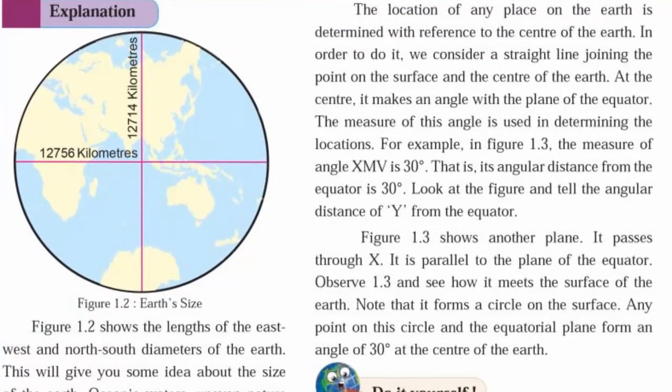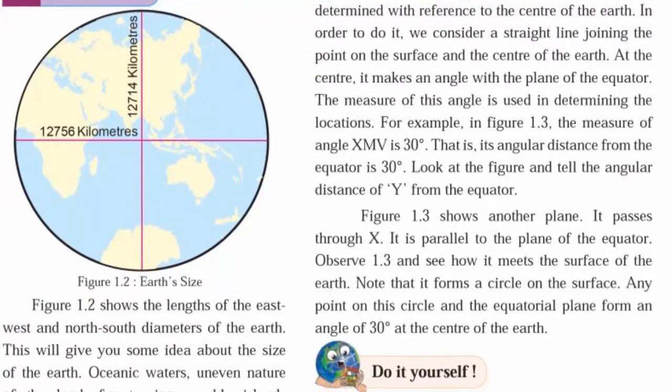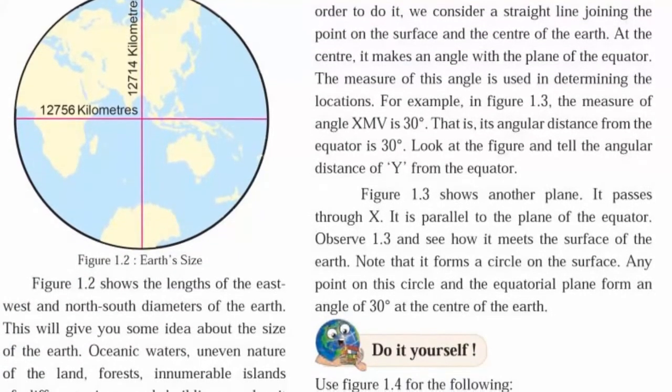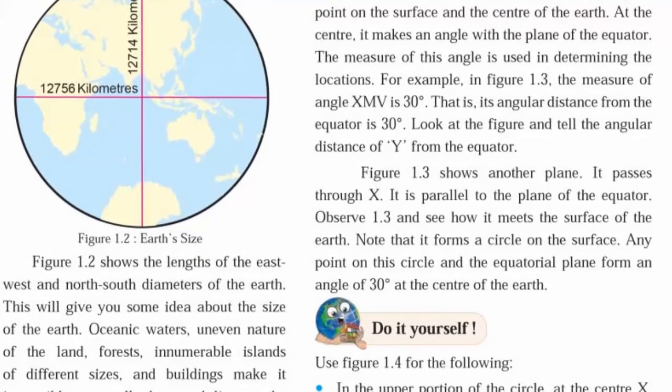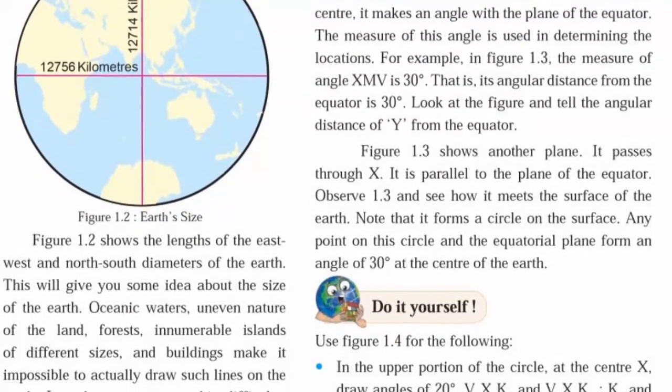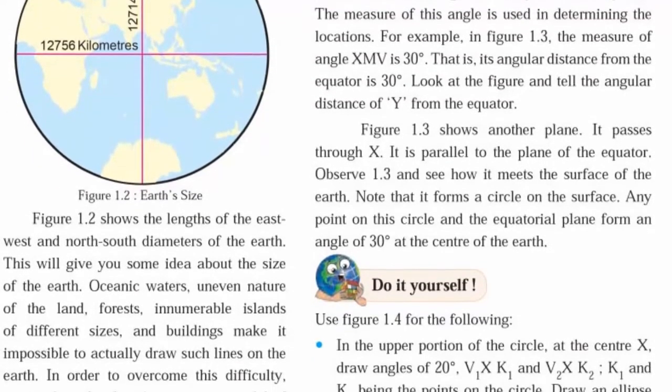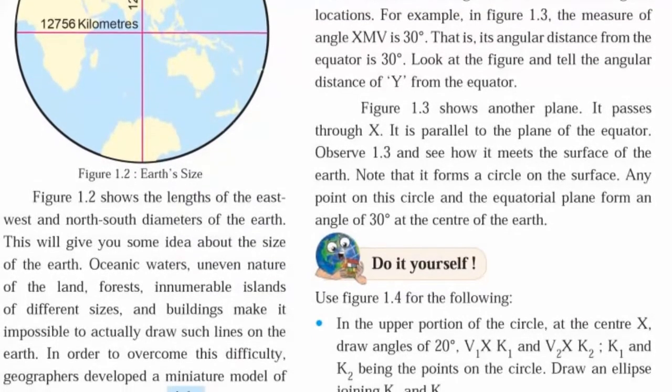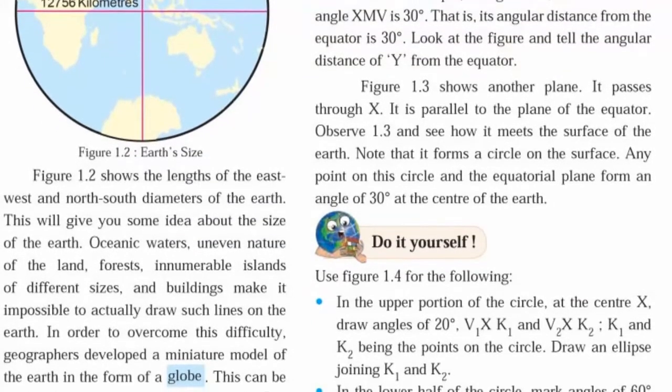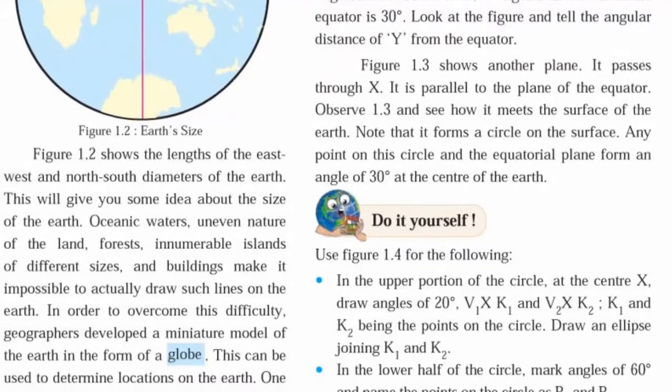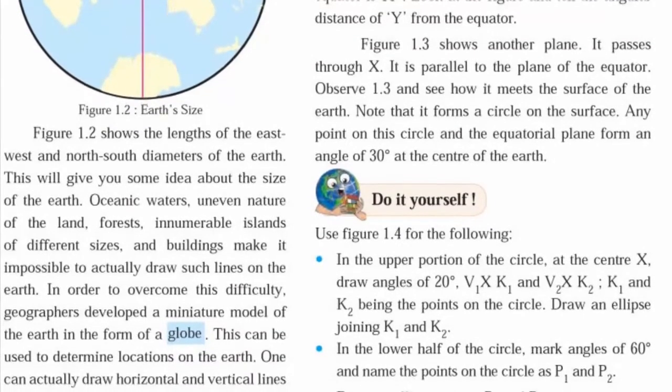There are forests, uneven lands, innumerable islands of different size, buildings, and oceanic waters on the surface of the earth. In order to overcome this difficulty, geographers developed a miniature model of the earth. It is known as globe. One can draw horizontal and vertical lines on the globe.